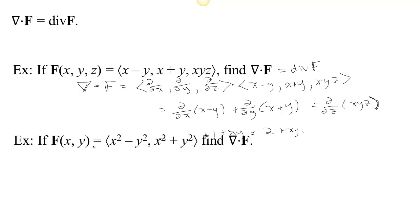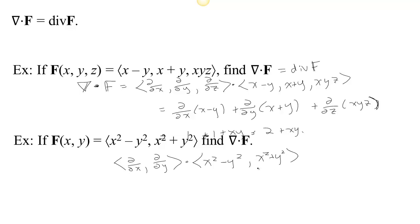If the context is a two-dimensional vector field with two inputs and two outputs, we just assume the del operator is the shorter one with only derivatives with respect to x and y since there is no z. We can still compute ∇·F. For example, the derivative with respect to x of the first component is 2x, plus the derivative with respect to y of the second component is 2y, so we get 2x + 2y.